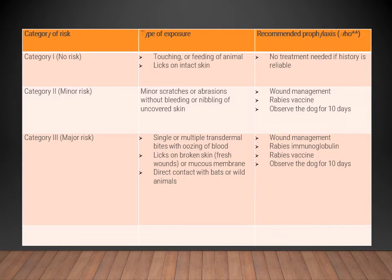Category three is a case of major risk. There are single or multiple transdermal bites, meaning there is penetration of tissue with oozing of blood, or licking on broken skin or mucous membrane, or direct contact with bats or wild animals. A history of bite from a wild animal places the case directly in the major risk category. Wound management, immunoglobulins, and vaccine are all required.